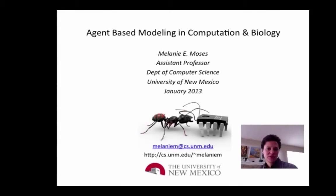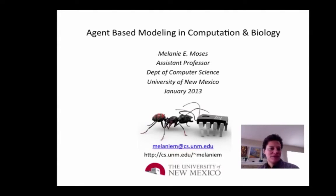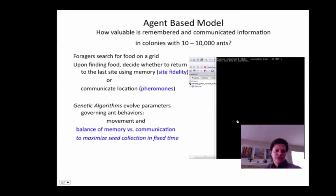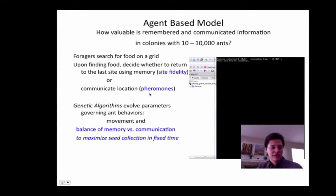I'm a professor in the Department of Computer Science at UNM and I also have an appointment in the Department of Biology. I'm going to tell you about some research that we've been doing in my lab over the last couple of years using agent-based models, very much like the kinds of agent-based models that you all are learning to build. We've used those models to study complex systems — specifically ant colonies and computer systems — and we learn a lot about each system by studying the other. In our models, foragers are searching for food on a grid, and upon finding food, they decide whether or not to return to where they went using site fidelity or to communicate using pheromones.